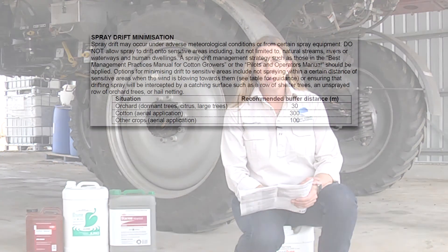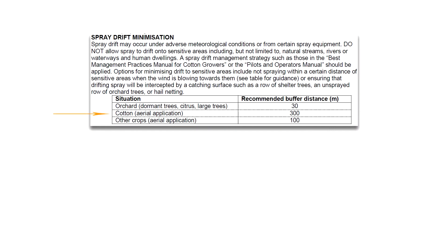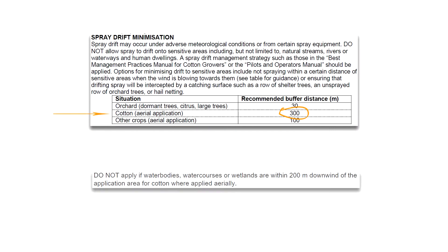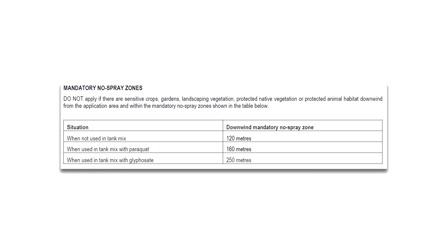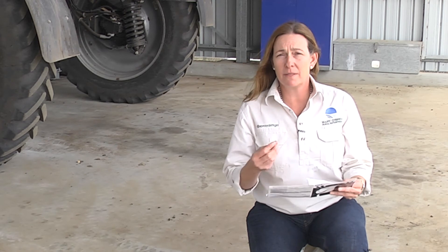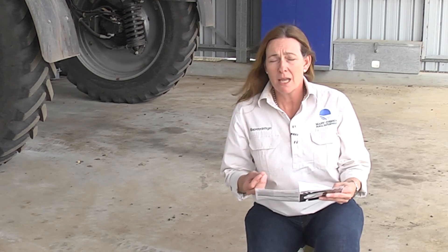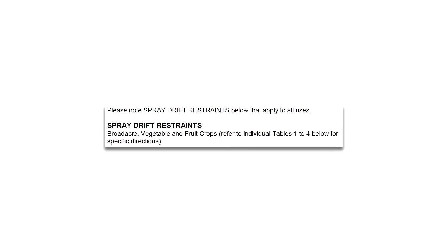Another key area of the labels is mandatory no-spray zones, or buffer zones. These may change with different products, different application techniques, and can also change dramatically depending on the tank mix you use. There may be some very specific warnings, particularly with our Group I herbicides, around drift restraints and managing spray drift risk.